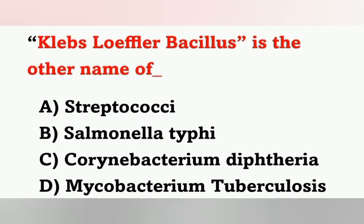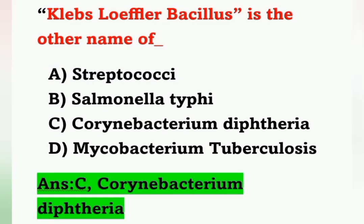Next question: Klebs–Löffler bacillus is the other name of which of the following? Options: A) Streptococcus, B) Salmonella typhi, C) Corynebacterium diphtheriae, D) Mycobacterium tuberculosis. Klebs–Löffler bacillus is also known as Corynebacterium diphtheriae, which causes diphtheria. Option C is the correct answer.